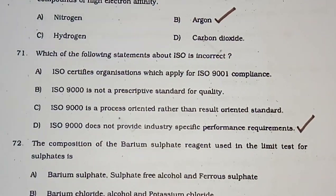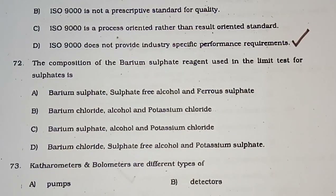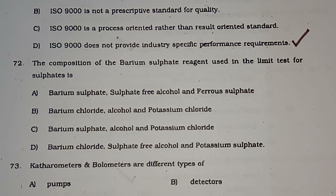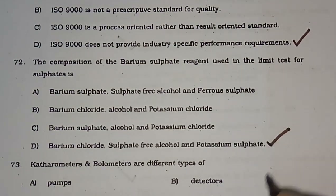Question number 72: The composition of barium sulfate reagent used in the limit test for sulfate — this is an important question regularly asked in pharmacy exams. Options include barium sulfate with various combinations. The correct answer is option D — barium chloride, sulfate-free alcohol, and potassium sulfate.